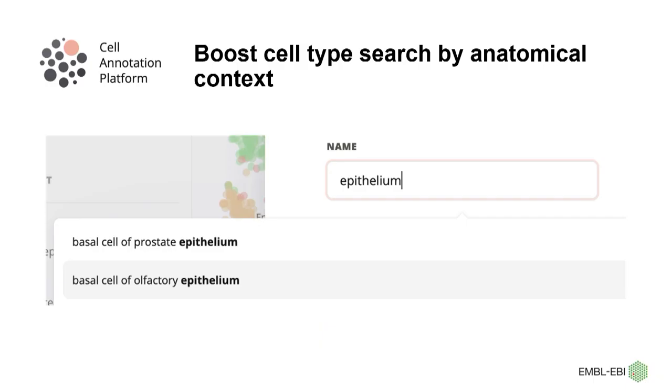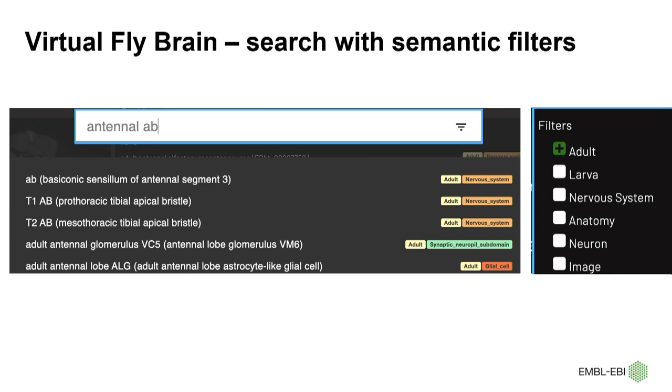Another example is context-specific search. In this case, the context is the prostate gland. Having entered 'prostate gland,' when you then choose cell types, it boosts cells in the prostate gland to the top of the list. It doesn't eliminate any other cells, but the idea is to nudge people towards using more specific terms, because often they'd find a supergeneral annotation like 'epithelial cell,' which is less useful. Another example is filters: in the Virtual Fly Brain project, we give people options to filter their autosuggest, so you can choose to show only adult terms, or exclude adult terms, et cetera.